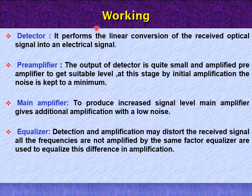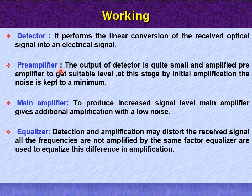The different sections of operation of the optical receiver are as follows. First, the detector performs the linear conversion of the received optical signal into an electrical signal. Then it goes to the pre-amplifier stage, where the output of the detector is quite small and is amplified by the pre-amplifier to get the suitable signal level. At this stage, by initial amplification, the noise is kept to a minimum.